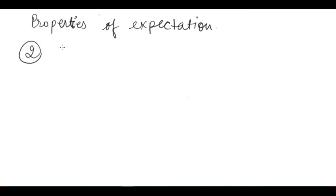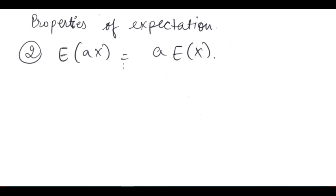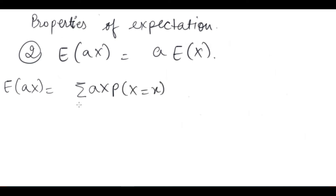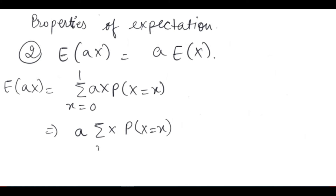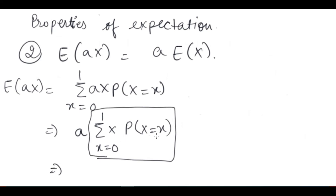The second property is: the expectation of a times X equals a times the expectation of X. So if we multiply a constant by a random variable and then take the expectation, the constant comes out. In the discrete case, E(aX) equals summation of a times x times P(x) over the full range, and since a is constant it comes out, leaving a times summation of x times P(x), which is a times E(X).